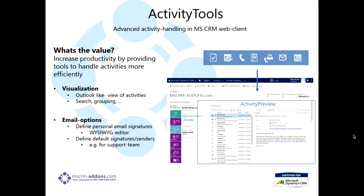I want to talk a little bit about our Activity Tools. Basically what Activity Tools is is advanced activity handling in the Microsoft CRM Web Client. Basically what it acts like is it kind of acts like Outlook inside of your CRM system — that's one of the major values of it. It also increases productivity by providing tools to handle activities a lot more efficiently. The visualization of it looks like Outlook, as you can see, so your users are kind of used to that. You can also search through activities or group them together, which makes things easier to find.